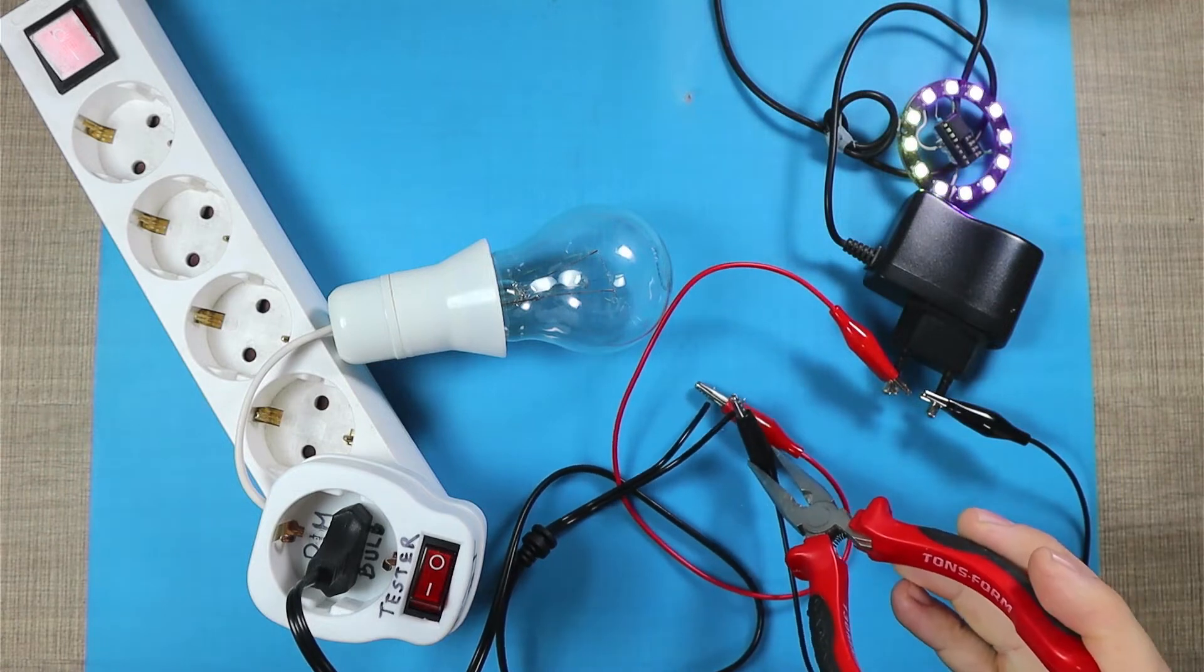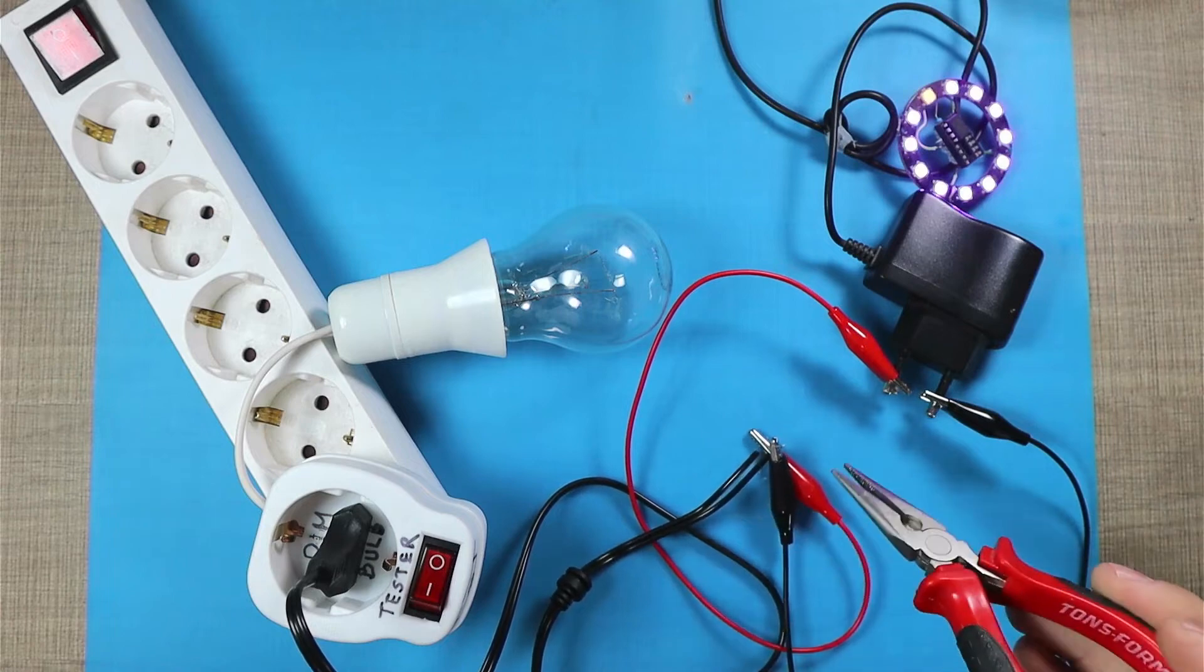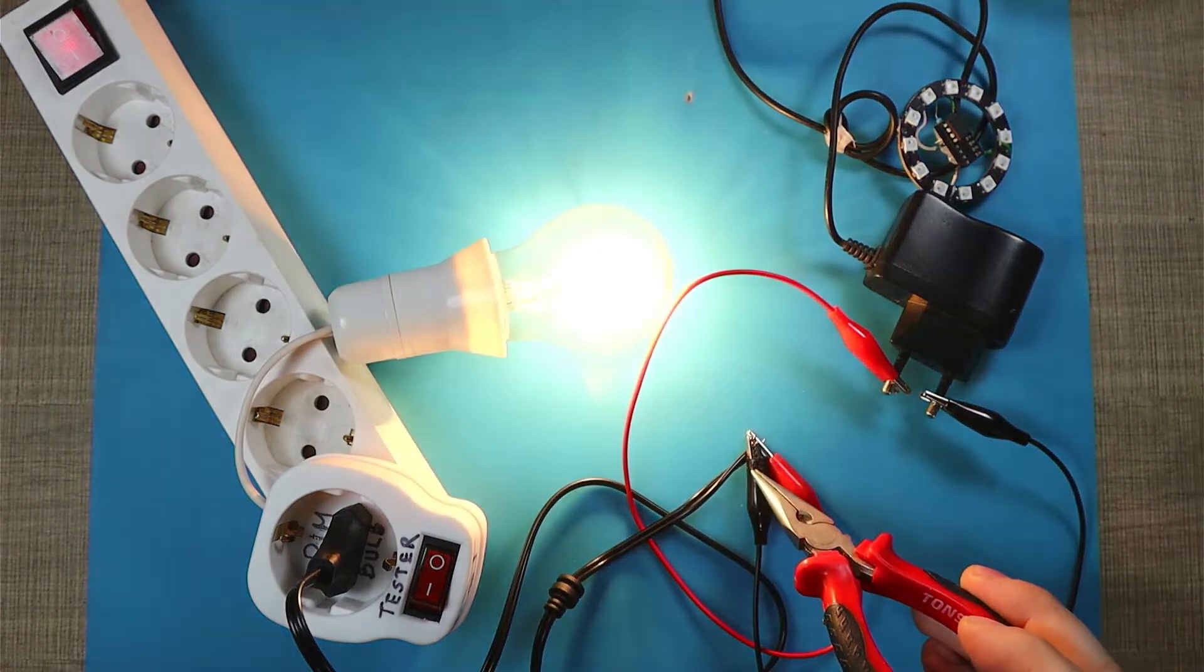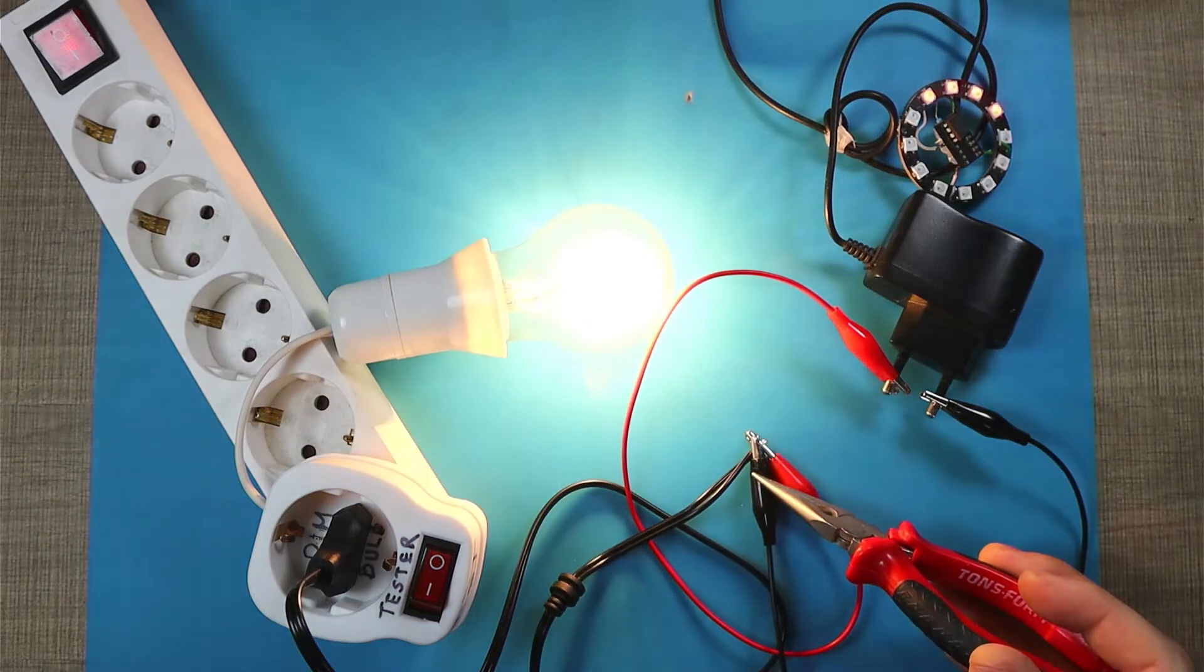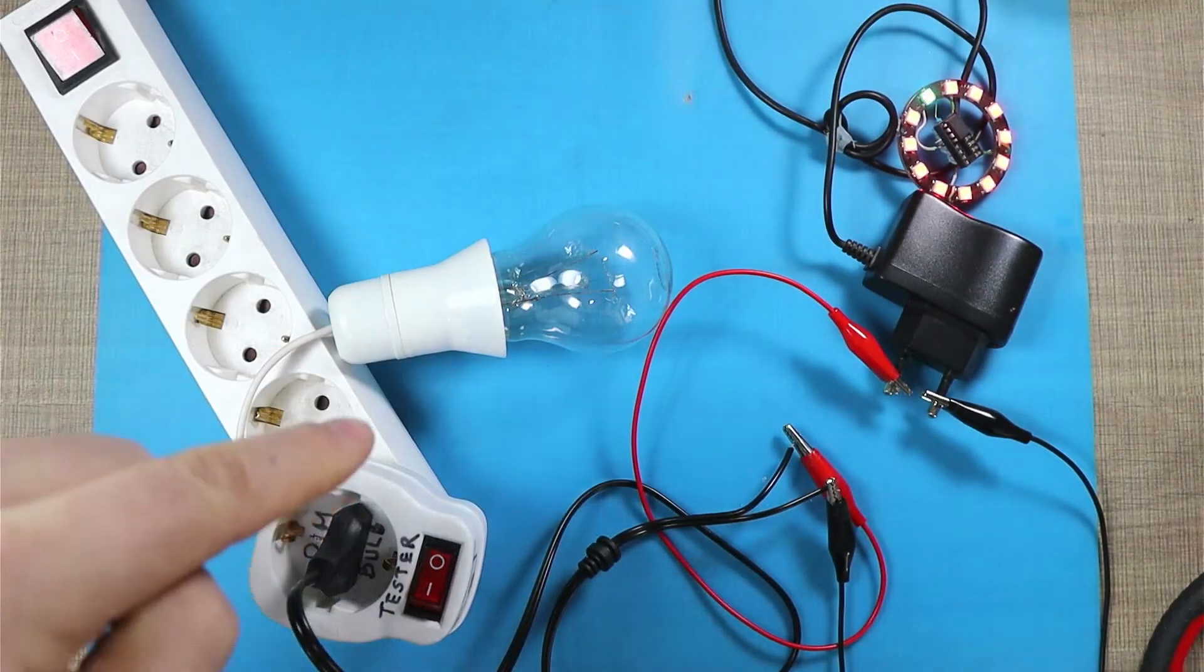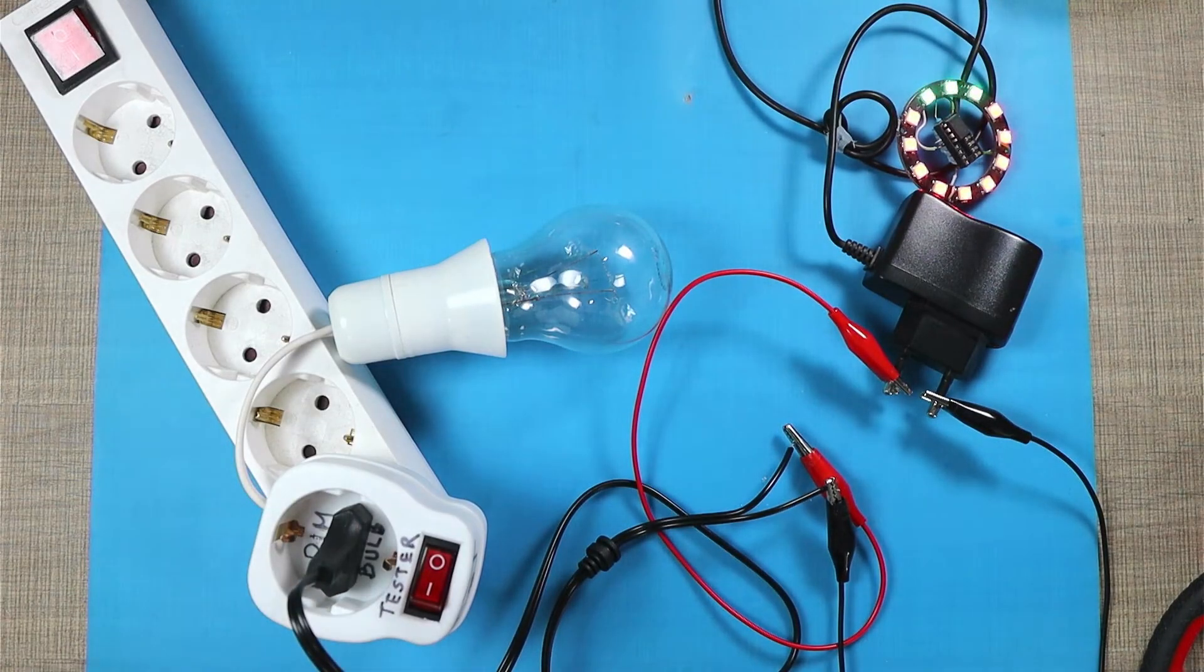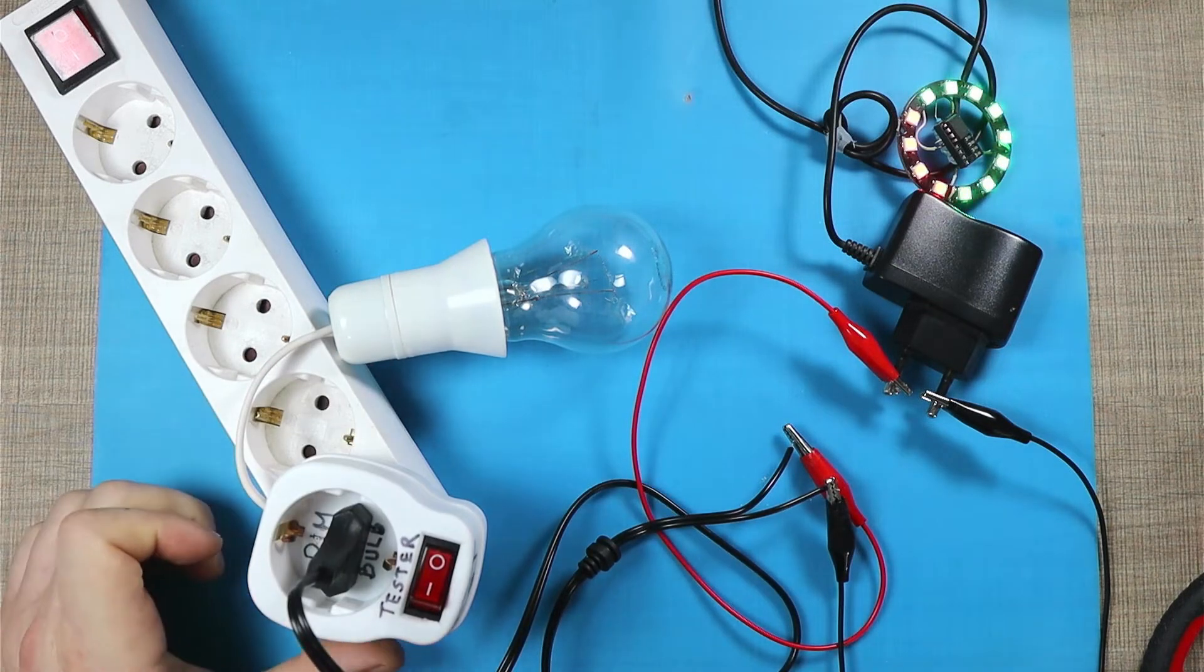We can do the same thing here. Let's try to do the same with the alligator clip here, and you know that this can really happen on your workbench if you're not careful. Now we are simulating a really dead short on the appliance and you see that the light bulb lights with the full intensity and it basically prevents any explosions.